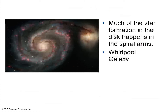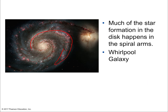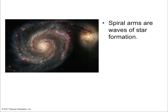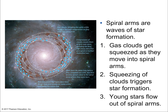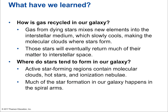Much of the star formation in the disk happens in the spiral arms — the areas between the arms have much less star formation. The arms are where matter gets condensed, making star formation possible. Spiral arms are waves of star formation: gas clouds get squeezed as they move into spiral arms, triggering star formation, and young stars flow out of the spiral arms. Not everything moves in unison — with 100 billion stars, they behave somewhat like individual molecules in a fluid, some moving faster or slower than others.